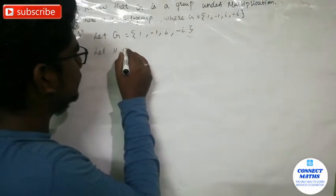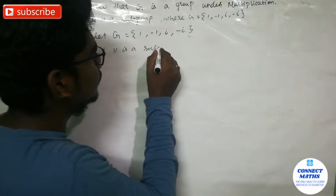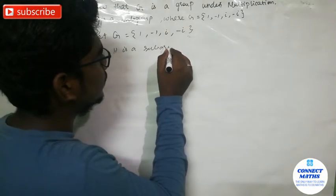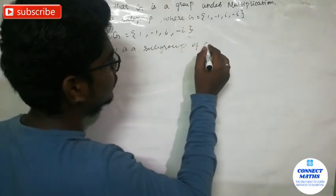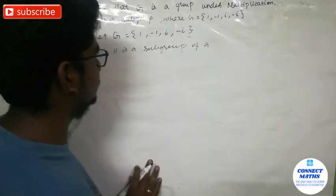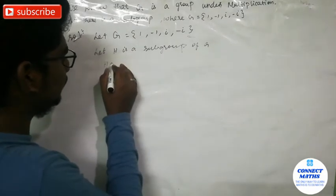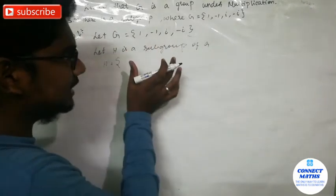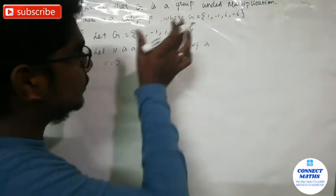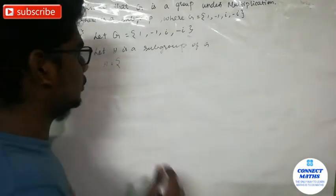Let H be a subgroup of G. Here we have the group G with its set of elements.